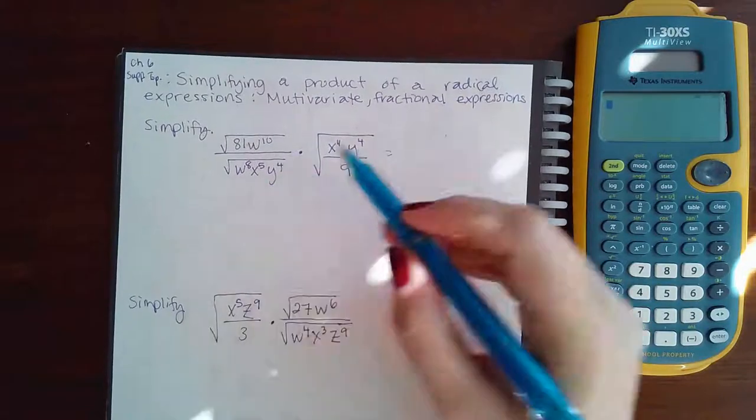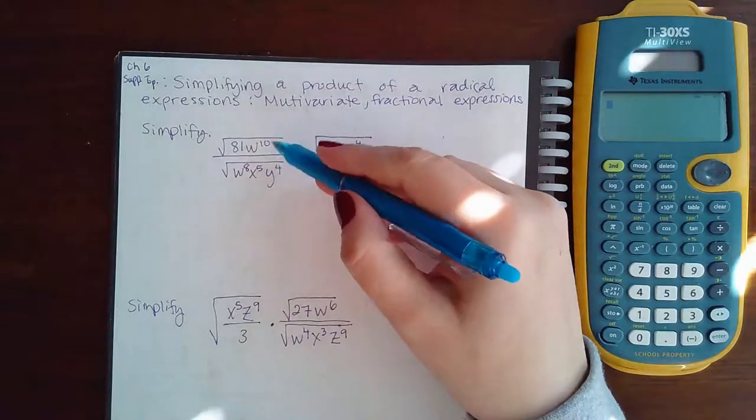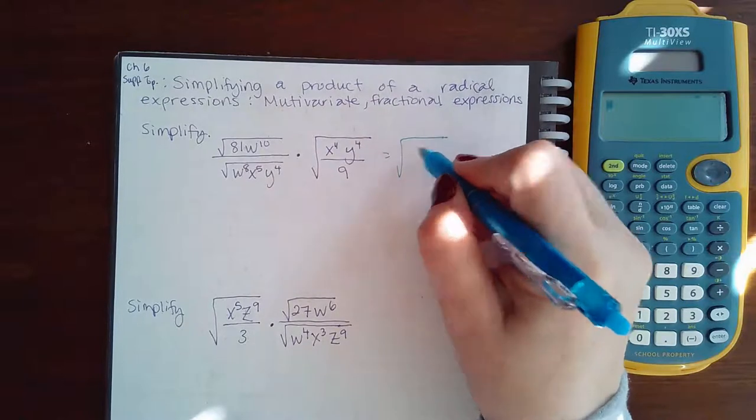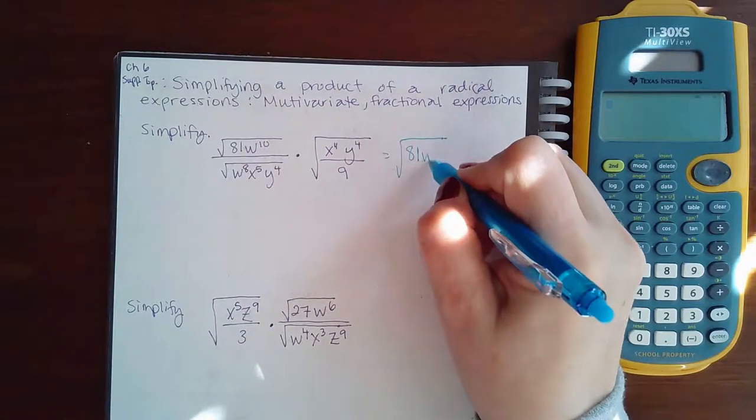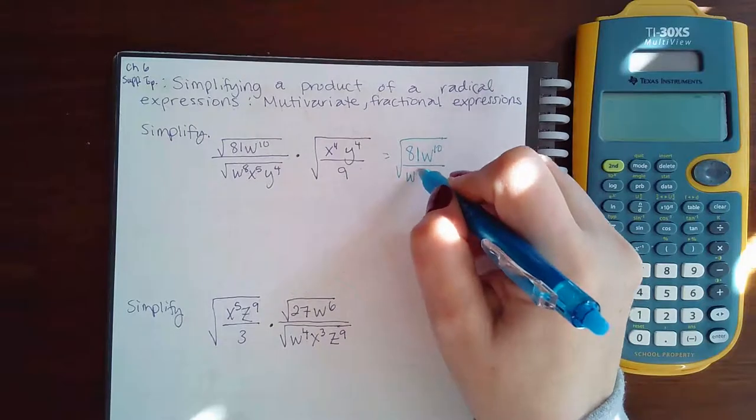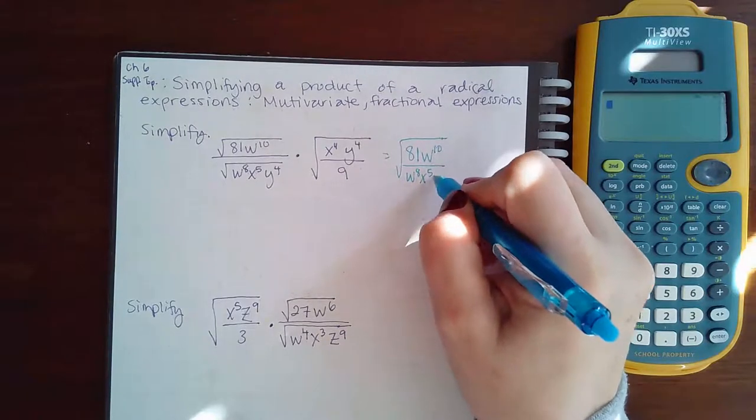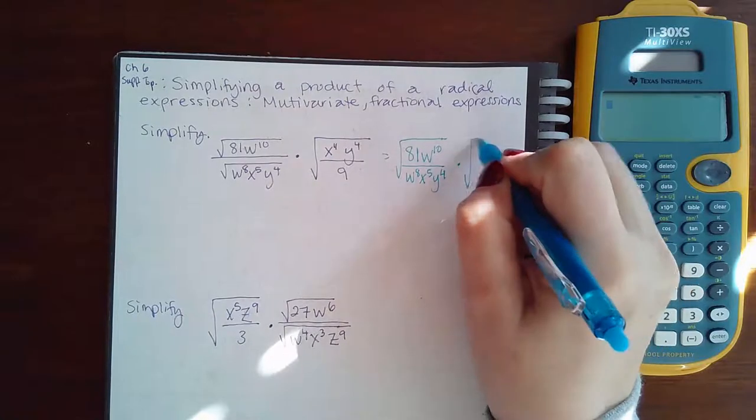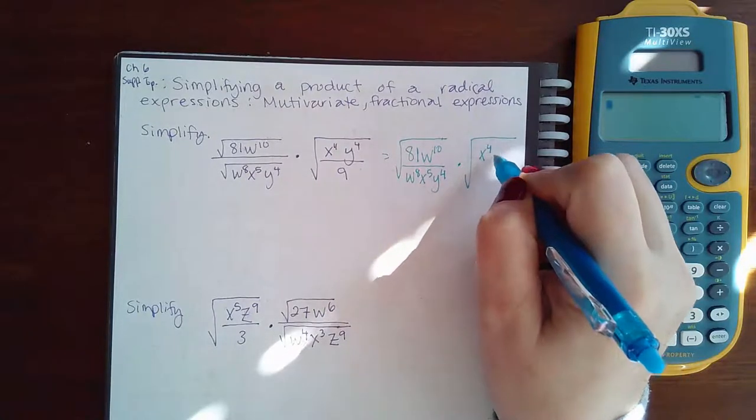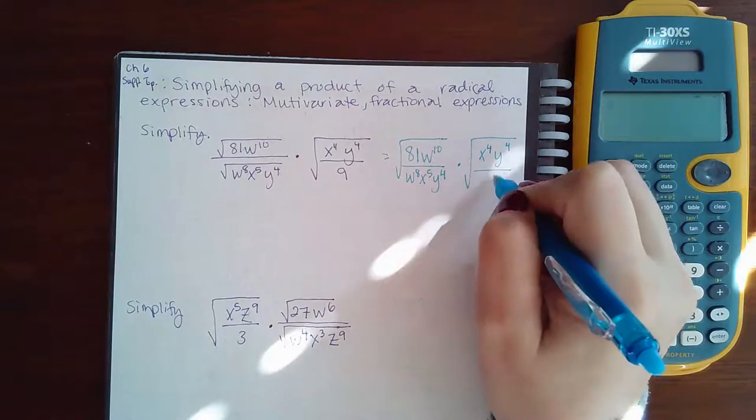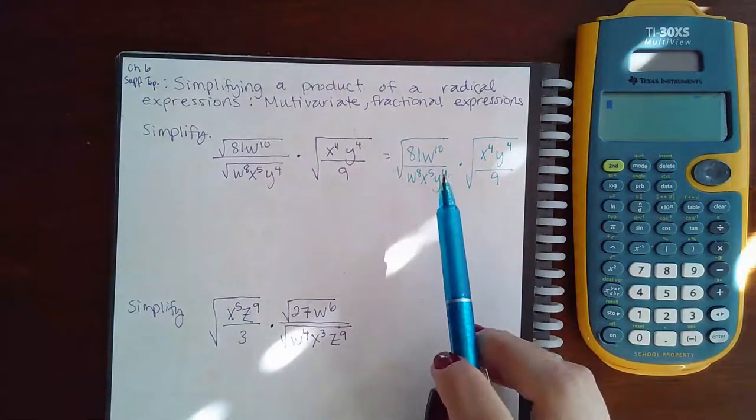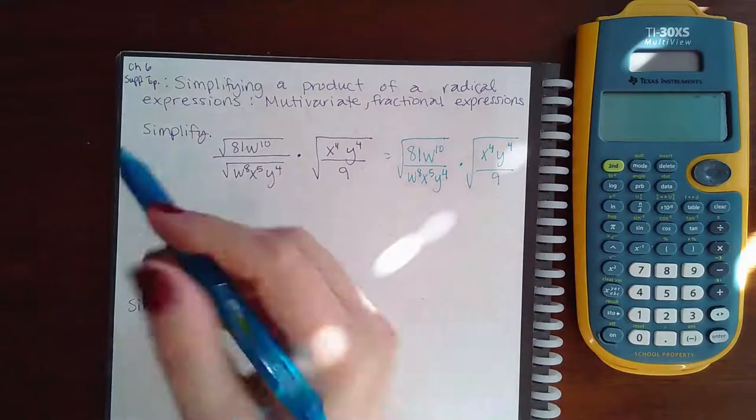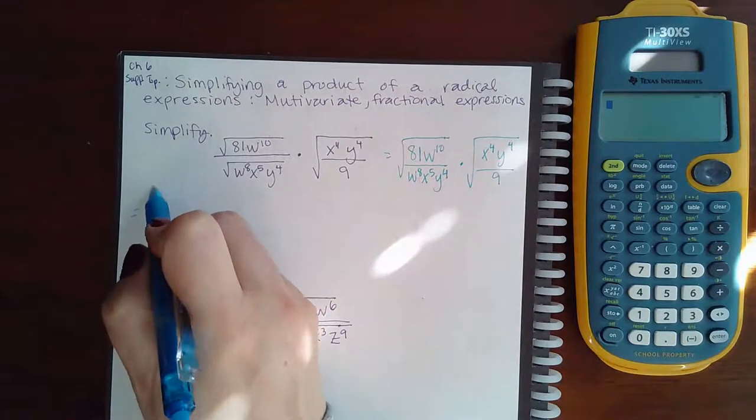The first thing I want to do is, instead of doing the square root of the top and the square root of the bottom, I'm just going to do the square root of the entire fraction, which we are allowed to do as long as everything is a real number. We also have another rule that says if we have the square root of one thing times the square root of another thing, we can just multiply those together.